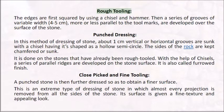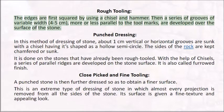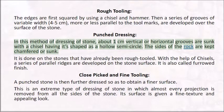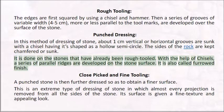Rough Tooling: the edges are first squared by using a chisel and hammer, then a series of grooves of variable width (4 to 5 cm), more or less parallel to the tool marks, are developed over the surface of the stone. Punched Dressing: about 1 cm vertical or horizontal grooves are sunk with a chisel having its tip shaped as a hollow semi-circle; the sides of the rock are kept chamfered or sunk. It is done on stones that have already been rough tooled; a series of parallel ridges are developed on the stone surface. It is also called furrowed finish.